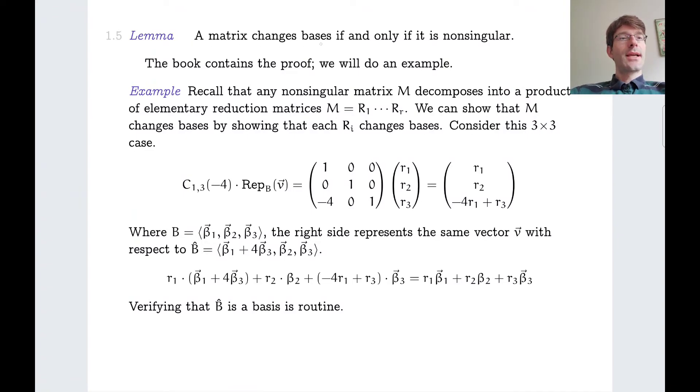A matrix changes bases if and only if it is non-singular. So if you have a change of basis matrix, then it must be non-singular and vice versa. If you have any non-singular matrix, you can view it as a change of basis matrix. This gives you yet another characterization of non-singular matrix. For an illustration of the proof, let's focus on the backwards direction, i.e., if you have a non-singular matrix M, then we want to view it as a change of basis matrix. Well, if it is non-singular, it can be decomposed into a product of elementary reduction matrices. We talked about this in the previous videos. These matrices Ri reflect steps of Gaussian elimination.